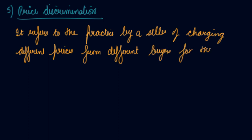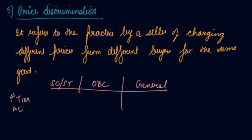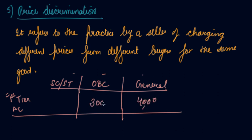Price discrimination refers to the practice of charging different prices for the same good. This happens in Indian railways as well — if you are SC or ST you pay one price for First AC; if you are OBC you pay another price. For example, a general passenger may pay four thousand rupees, an OBC passenger three thousand, and an SC/ST passenger one thousand rupees. This is price discrimination under monopoly.